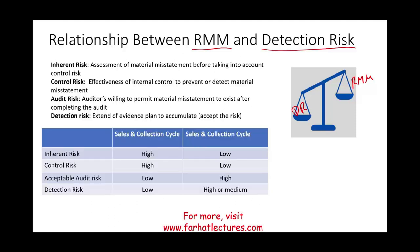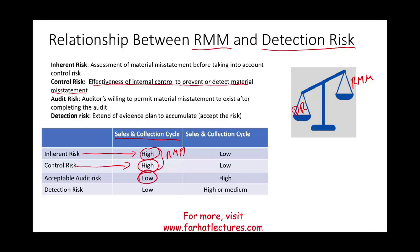These apply to a specific cycle or to the company overall. For example, looking at a sales and collection cycle: if we assess inherent risk as high — the sales cycle is risky, lots of estimates, judgment, complexity, unclear contracts — and control risk is also high, meaning internal controls are not effective, then RMM is high. If RMM is high and I'm willing to accept only a low audit risk, then my detection risk is low.